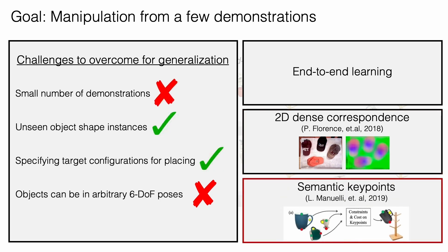Representing objects using sparse, semantic keypoints can enable both picking and placing, but this requires keypoint detectors trained on a large, hand-labeled dataset for each task. Furthermore, none of these approaches work well when objects are in out-of-distribution poses.